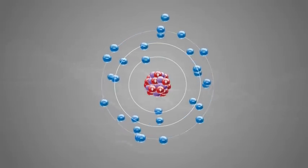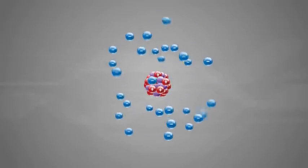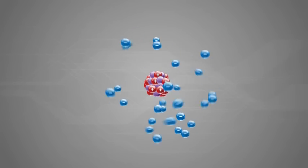Current flow or electron flow is possible only because electrons can be freed from their electrostatic attraction to the proton of an atom's nucleus.